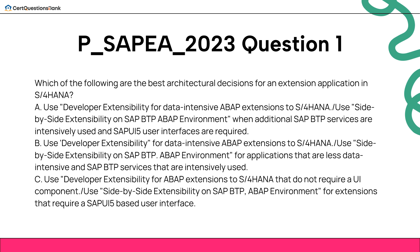B. Use developer extensibility for data-intensive ABAP extensions to S/4HANA. Use side-by-side extensibility on SAP BTP ABAP environment for applications that are less data-intensive and SAP BTP services that are intensively used. C. Use developer extensibility for ABAP extensions to S/4HANA that do not require a UI component. Use side-by-side extensibility on SAP BTP ABAP environment for extensions that require a SAP UI5-based user interface.